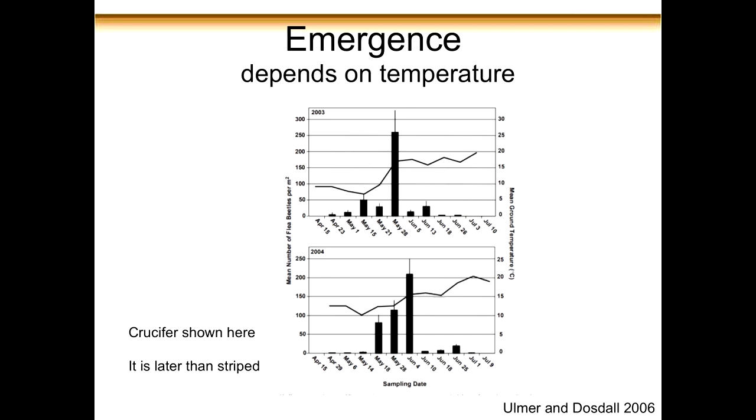Let's take a look at the life cycle a bit more. Here I'm showing the emergence patterns — this is data from Ulmer and Dostal from 2006. This shows the crucifer flea beetle; if you were looking at the striped flea beetle, it would be a little bit earlier. You can see that depending on the year and the temperature, they will come out of the wintering sites when the temperature is around 10 degrees. They'll walk around and usually hop into the edges of fields. That's kind of important because there might be options of using trap crops — except if it gets very warm, like 25 degrees in southern Alberta, then flea beetles move into the field more like rain, making trap crops a real challenge.